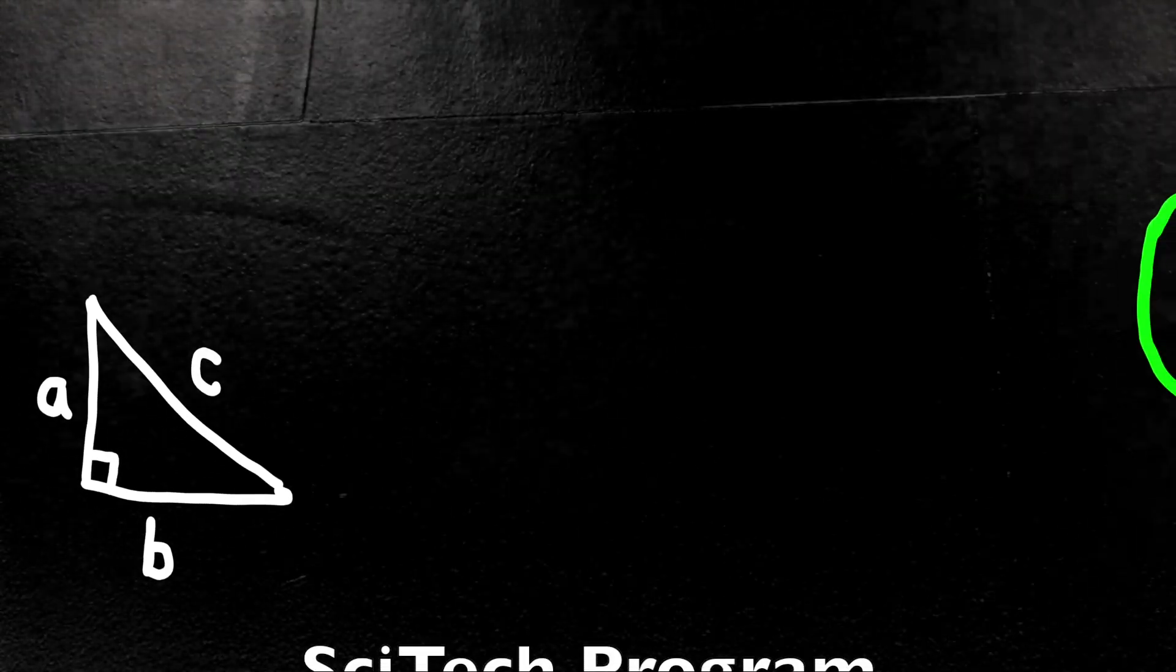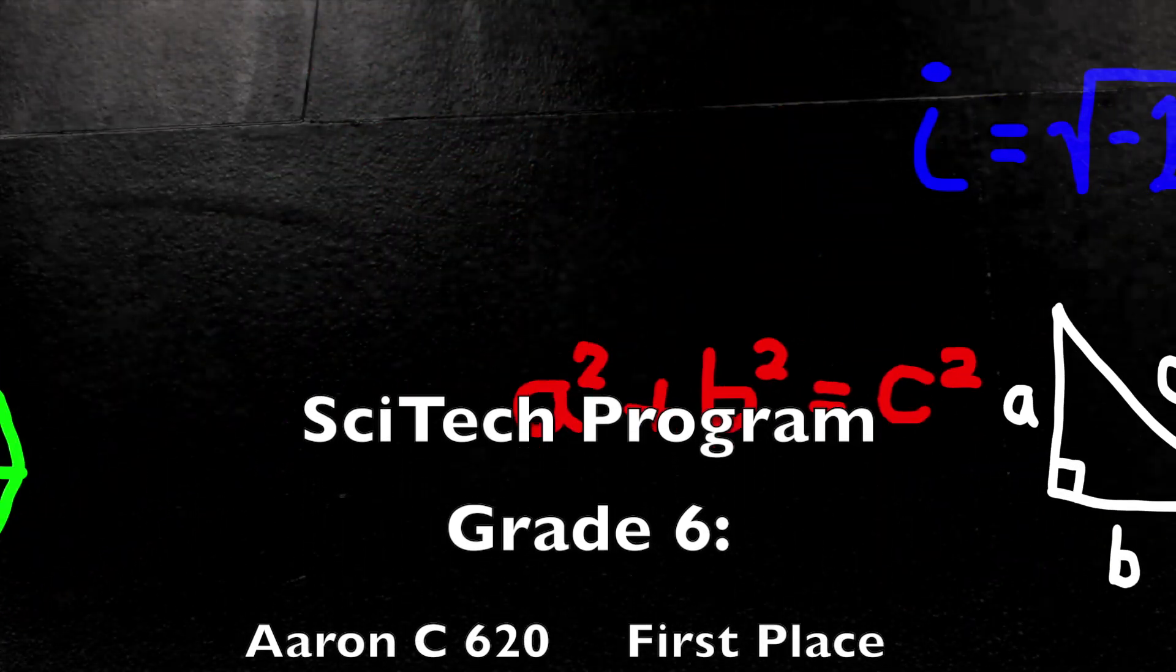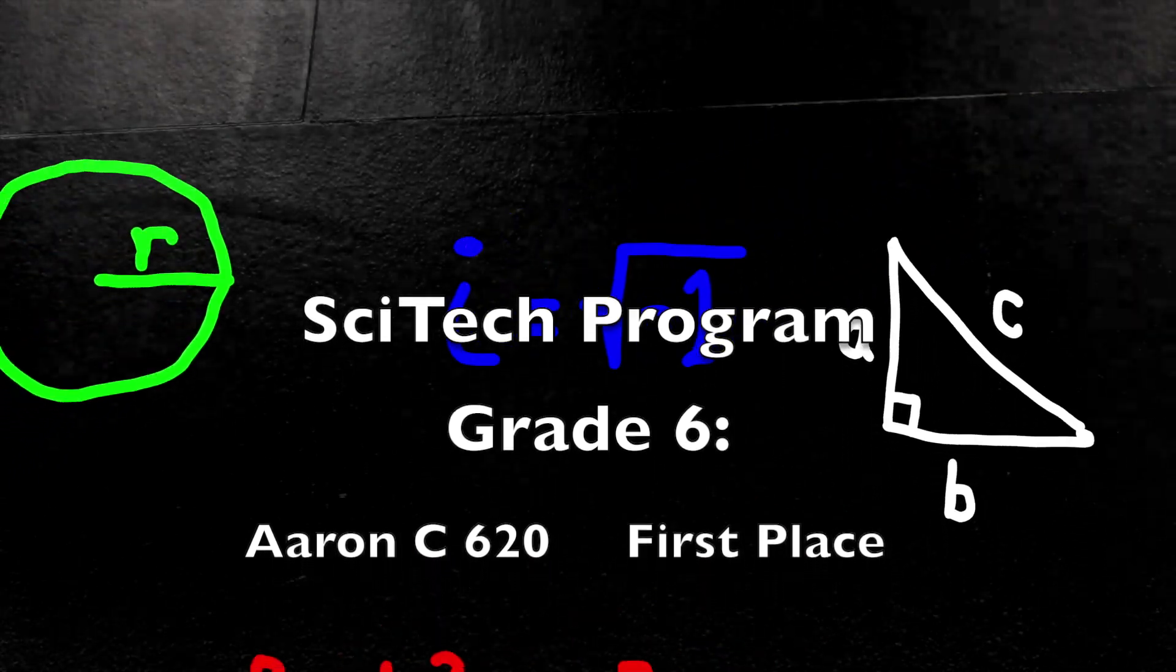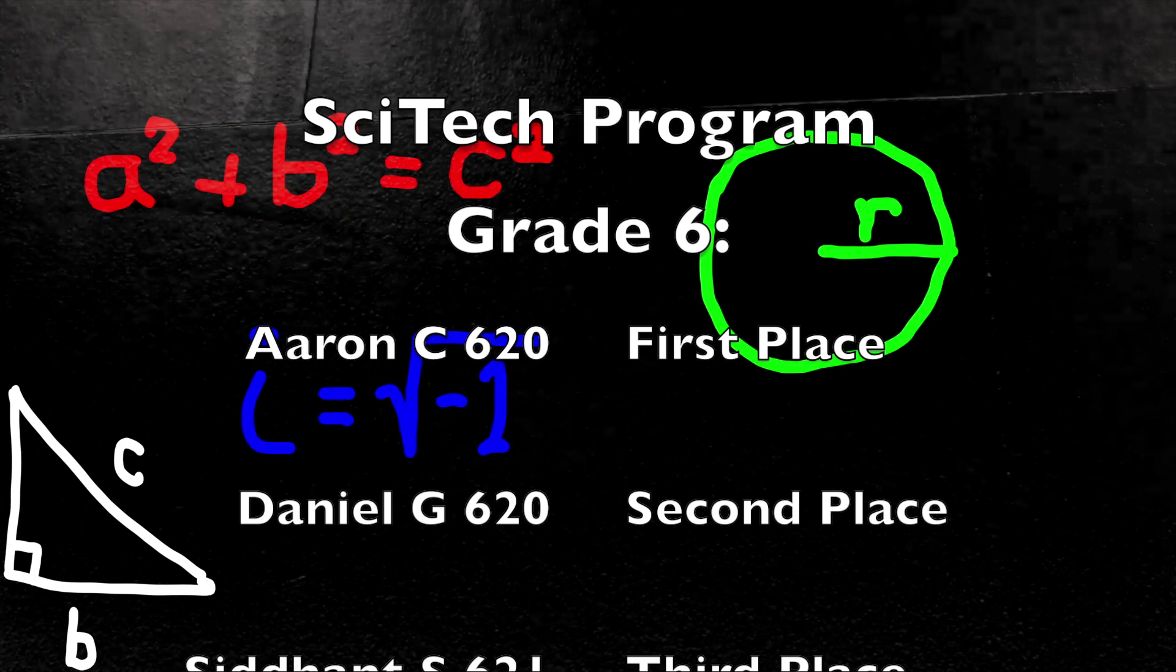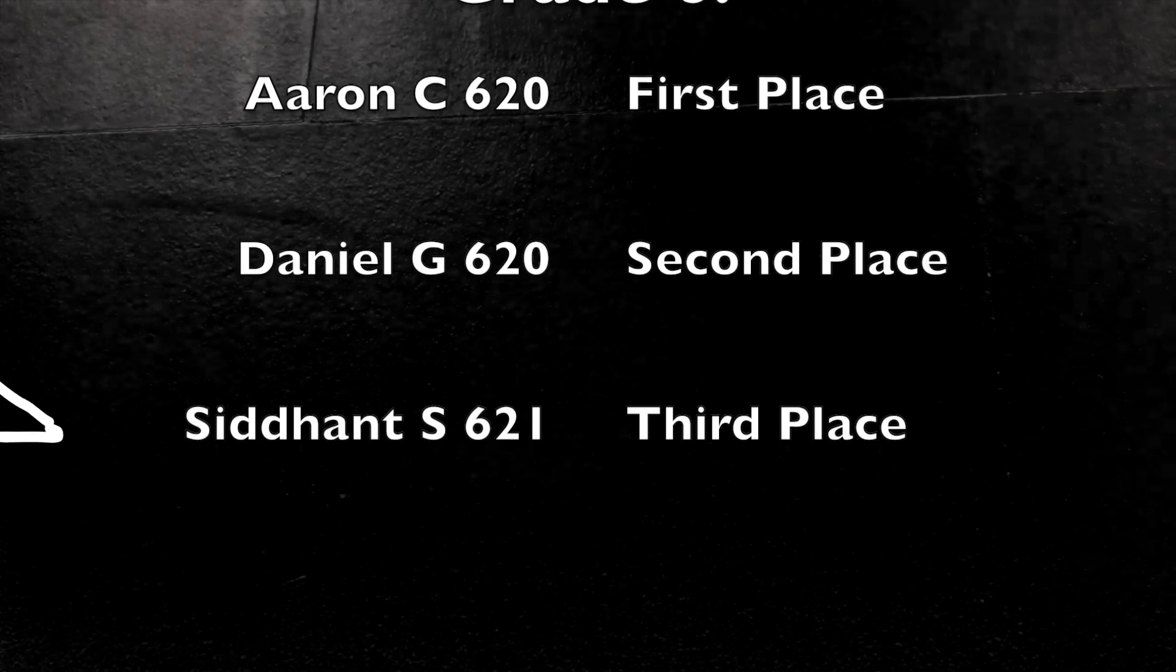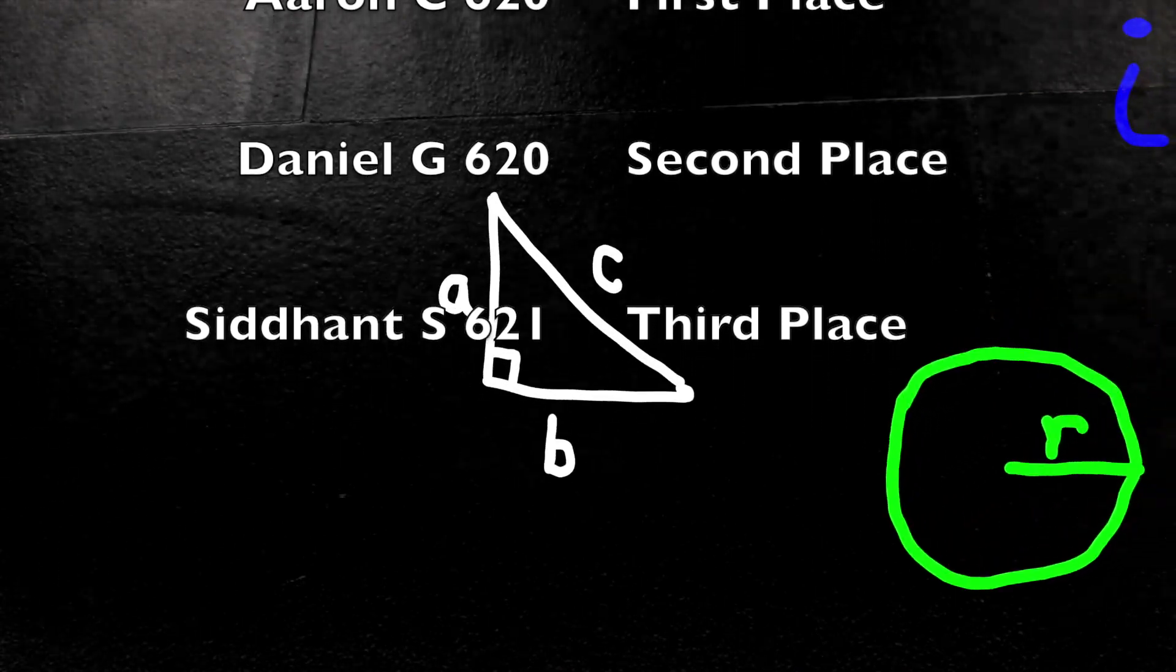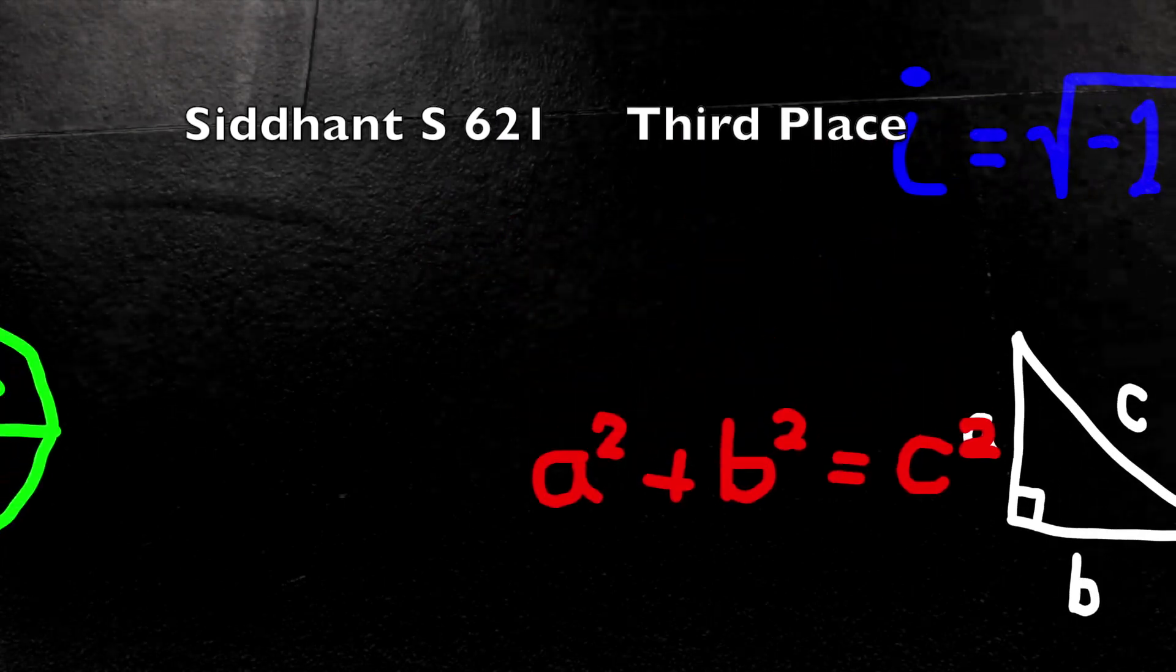Here are the students with the top scores from the SciTech program. In first place for Grade 6, Aaron C. from 620. In second place, Daniel G. 620. And in third place, Siddhant S. from 621.